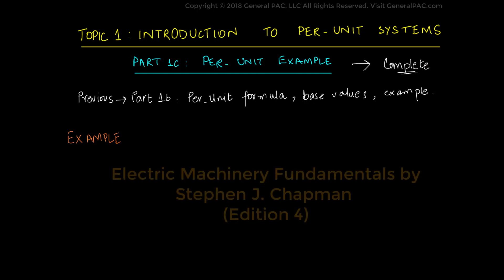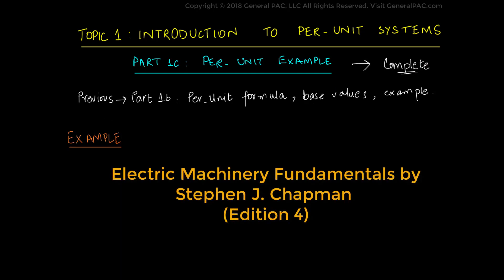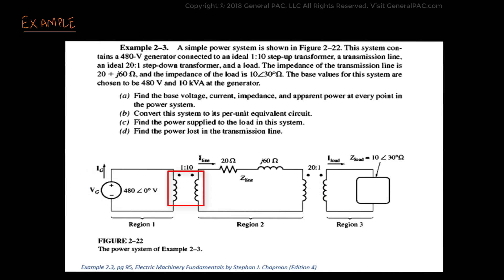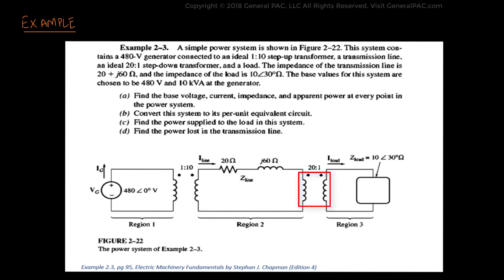The example is taken from a book called Electric Machinery Fundamentals by Stephen Chapman, Edition 4. In this example, in Region 1, we have a 480V generator at 0 degrees and there is a step-up transformer which leads us to Region 2. In Region 2, we have a transmission line that is 20 ohm resistance and 60 ohm reactance. Then there is a step-down transformer which leads us to Region 3, where we have a load that is 10 ohms at 30 degrees.